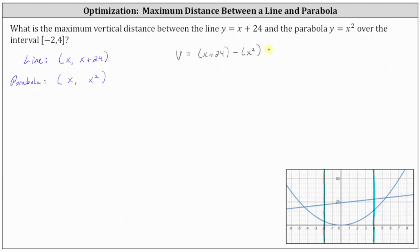Let's rewrite this as negative x squared plus x plus 24. We're trying to maximize the vertical distance. We should recognize that v is a quadratic function with a graph that is a parabola opening down, because the leading coefficient is negative 1, and therefore the maximum will occur at the vertex.